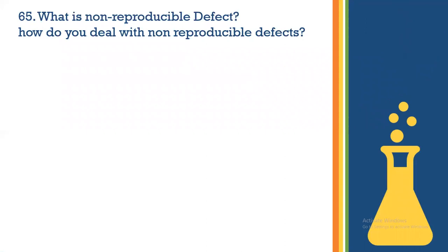What is a non-reproducible defect? How do you deal with a non-reproducible defect? Most interview students say defects which are not identified during retesting are called non-reproducible defects, and defects identified during retesting are called reproducible defects. That is not correct. If you observe the defect template, first time while defect reporting itself, they ask: is it reproducible — yes or no?